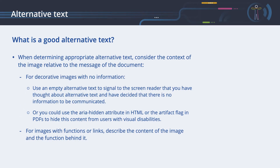When determining appropriate alternative text, consider the context of the image relative to the message of the document. For decorative images with no information, like a company logo appearing on every page of a PDF document, use an empty alternative text to signal to the screen reader that you have thought about alternative text and have decided that there is no information to be communicated.